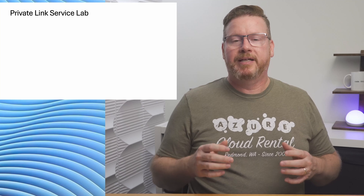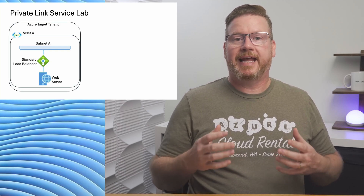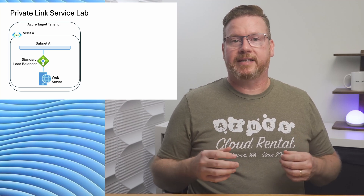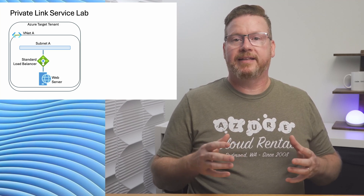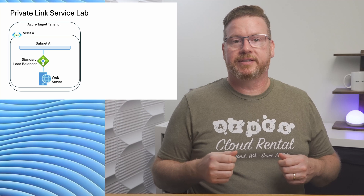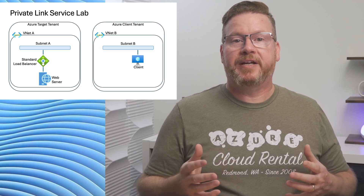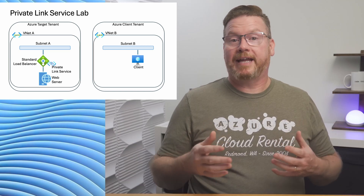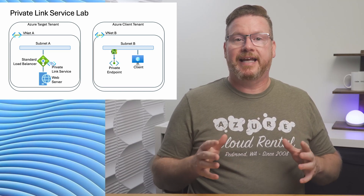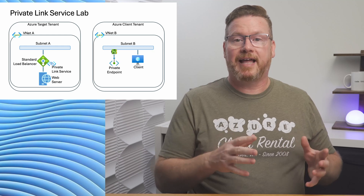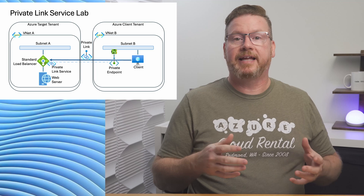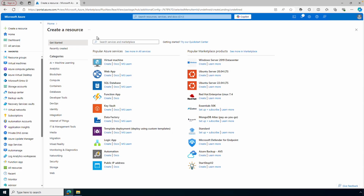Let's review the lab. There's one tenant with a standard load balancer that has a web server in the backend pool — it's an internal load balancer with no public access. This is the target tenant that hosts the Private Link Service. There's a second tenant with a client, with no peering or VNet connectivity between the two VNets. Coming up, we'll add a Private Link Service to the standard load balancer, add a private endpoint in the client tenant, and then test to verify the client can access the web page over the private link.